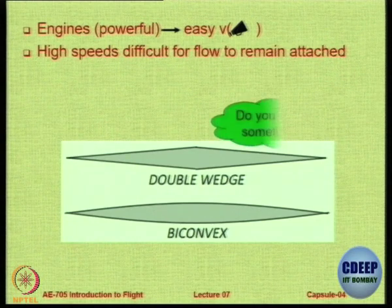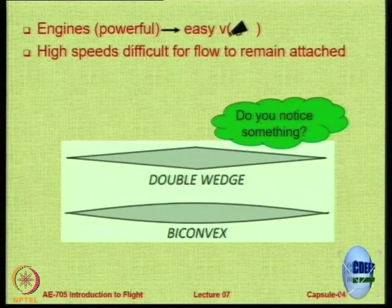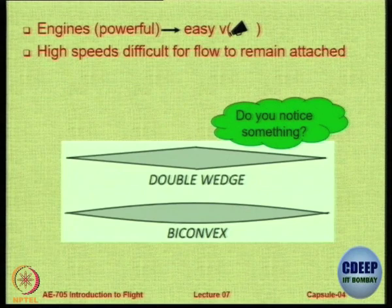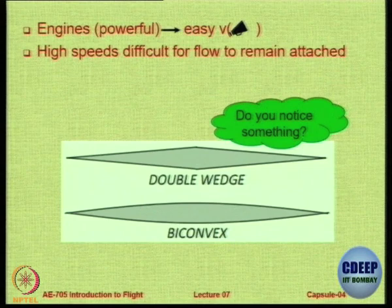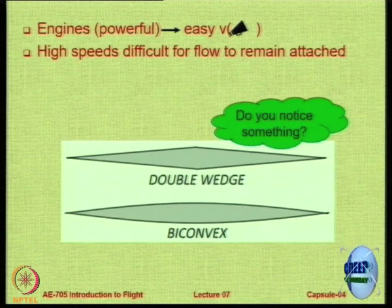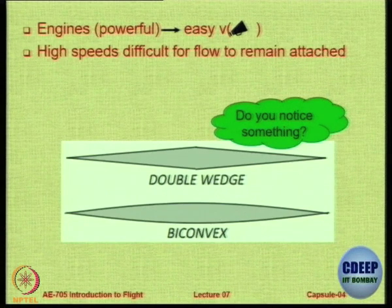What is special about these supersonic aerofoils compared to others? The leading edge is sharp and the trailing edge is also sharp in both double-wedge and biconvex shapes — the leading edge is sharp in these aerofoils. The problem is that an aircraft flying supersonic will also need to fly subsonic, and it will be very bad in that condition — though it will still produce some lift by angle of attack, it will be inefficient.